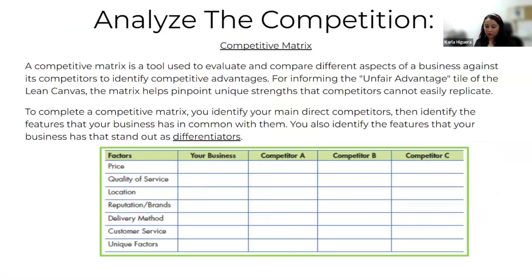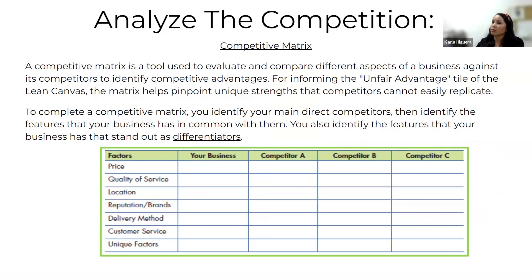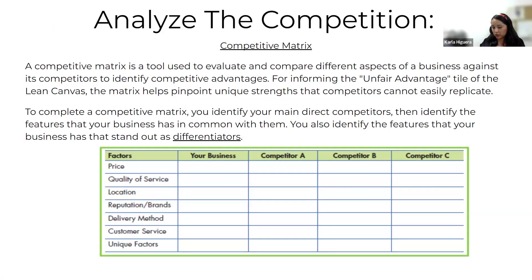What is a competitive matrix? It's a tool used to evaluate and compare different aspects of a business. We'll touch on the Lean Canvas mentioned towards the end. The point of this competitive matrix is to identify our differentiators by creating a chart. The next slide will show how to create one.